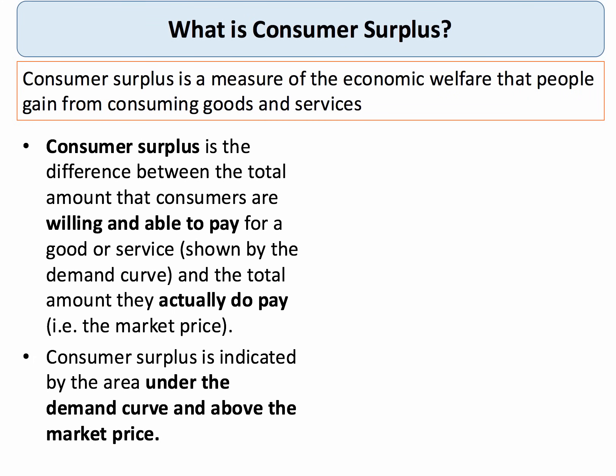Consumer surplus is a measure of the welfare that people gain from consuming goods and services, and it's simply defined as the difference between the total amount a consumer is willing and able to pay for a good or service — indicated by the demand curve — and the total amount they actually do pay, i.e. the market price. So consumer surplus is always shown by the area underneath the demand curve and above the market price.